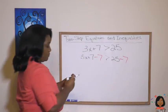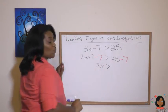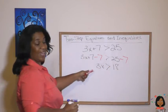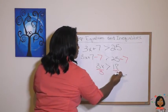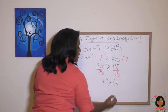Now let's simplify. 3x is greater than 25 minus 7 is 18. And now we got to get rid of the 3. We're going to divide both sides by 3. And we're left with x is greater than 6.